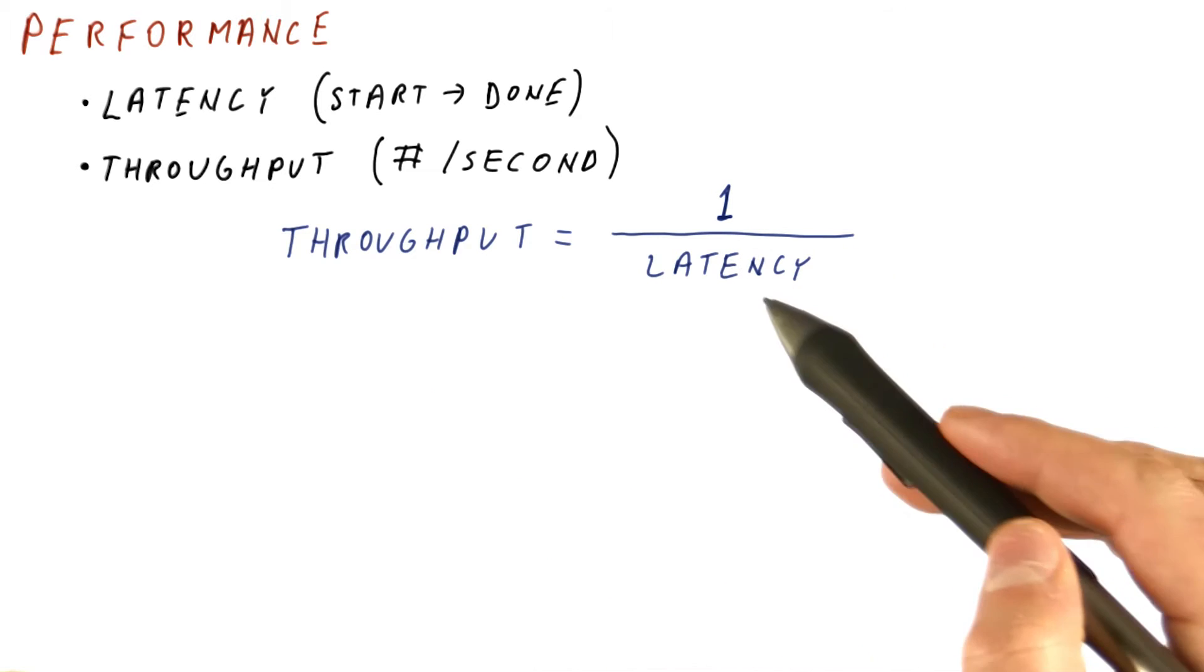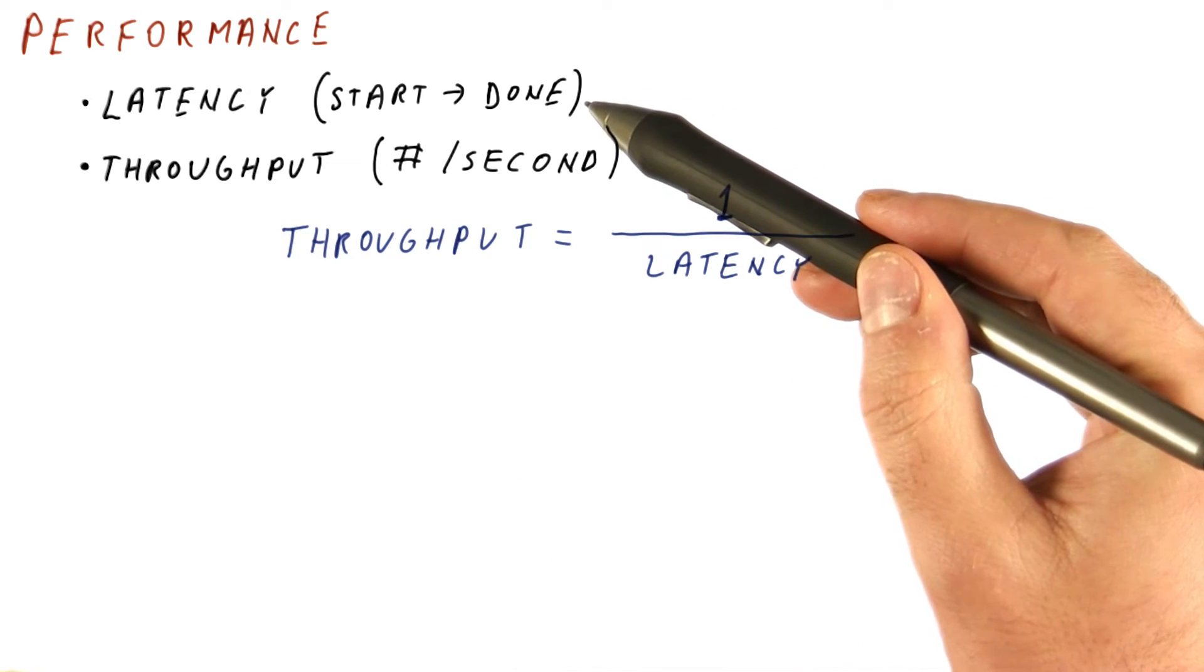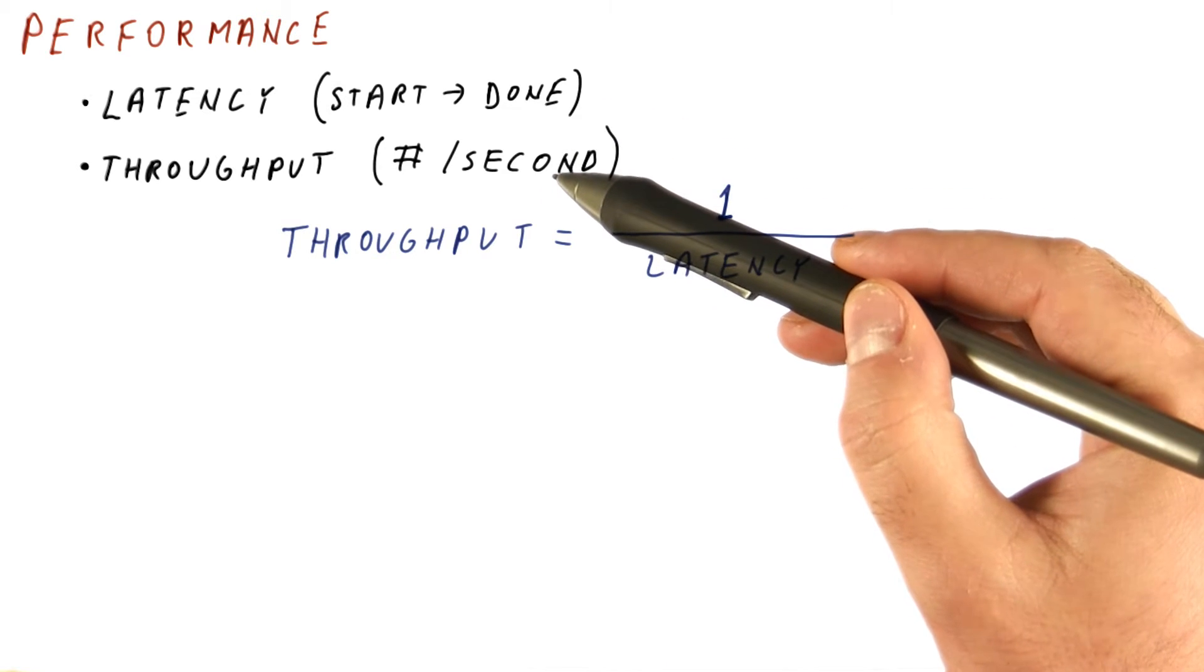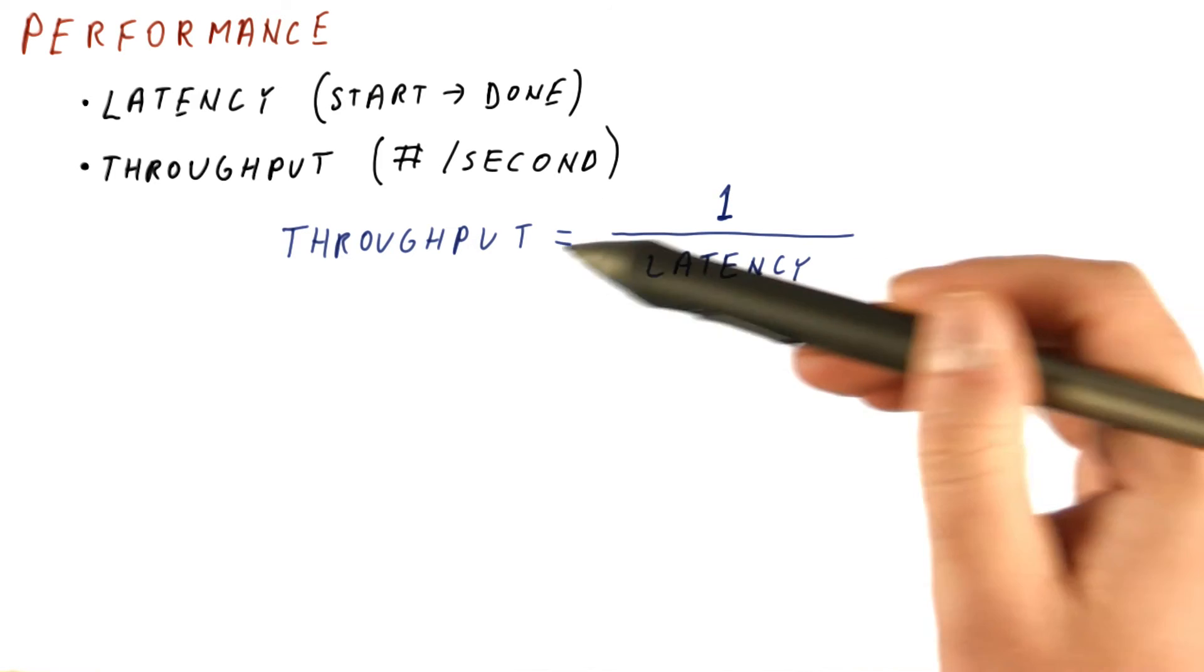And one would think that throughput is really one over latency. So for example, if it takes half a second to do something, then the number of those things we can do per second is going to be one over one half, and we get two for throughput.